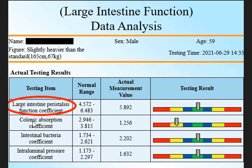We are looking at this screen, and we said the right report to check is the large intestine function data analysis. We are looking at the second parameter, which is the colonic absorption coefficient. If the reading is moderately abnormal low or severely abnormal low, the person is going to experience diarrhea.